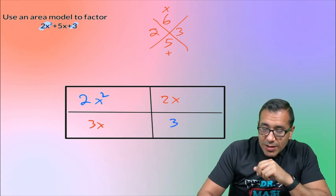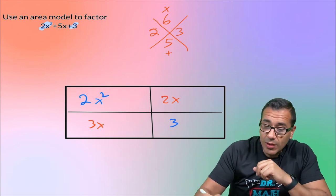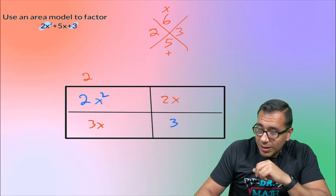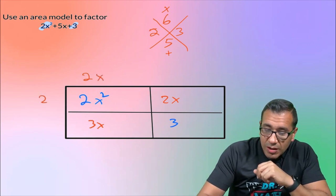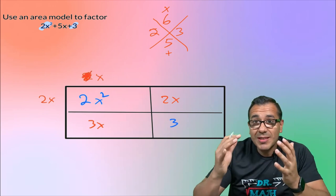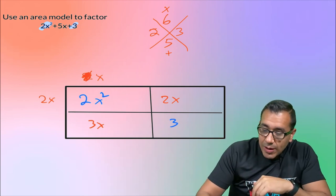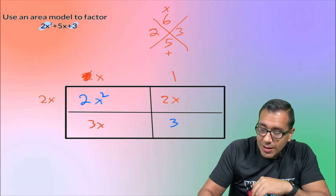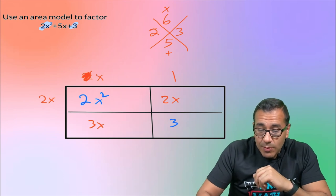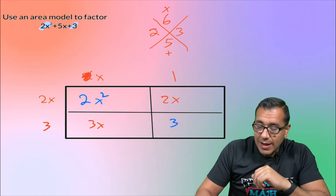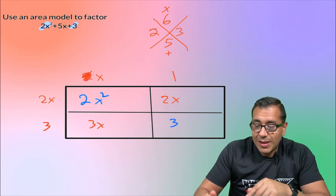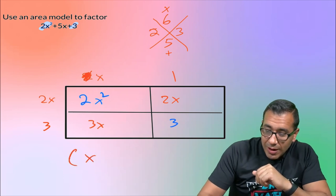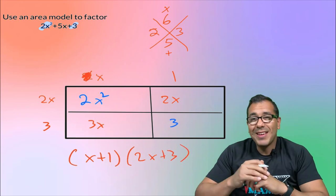Now let's get to work. What times what is going to be two X squared? Hopefully we see it's two X times X. If I put the two here, we're not going to be able to get that three, so we don't want two X there — we're actually going to put the two X right here. Two X times one gives me this two X right here. Now X times what gives me three X? X times three. Let's check everything: one times three gives me the three, three times X is three X, two X times one is two X. And that's what we started with. So now we found our factors: X plus one, and two X plus three.